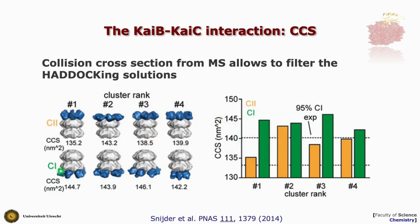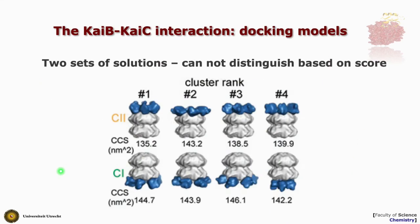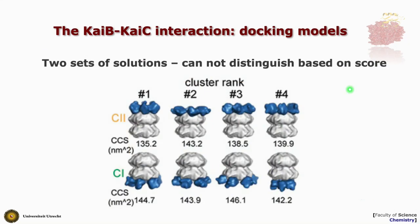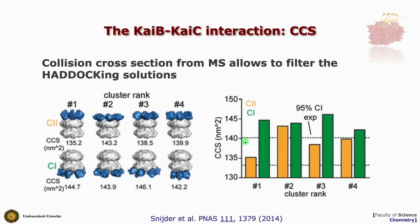One possible reason is that we are dealing with a non-globular system — KaiC has a hole in the center. In the vacuum of the MS spectrometer, a non-globular protein may compact, causing an underestimate of the collision cross-section relative to solution. If the dotted lines are shifted upward to account for this compaction, the C1 solution becomes the better fit.